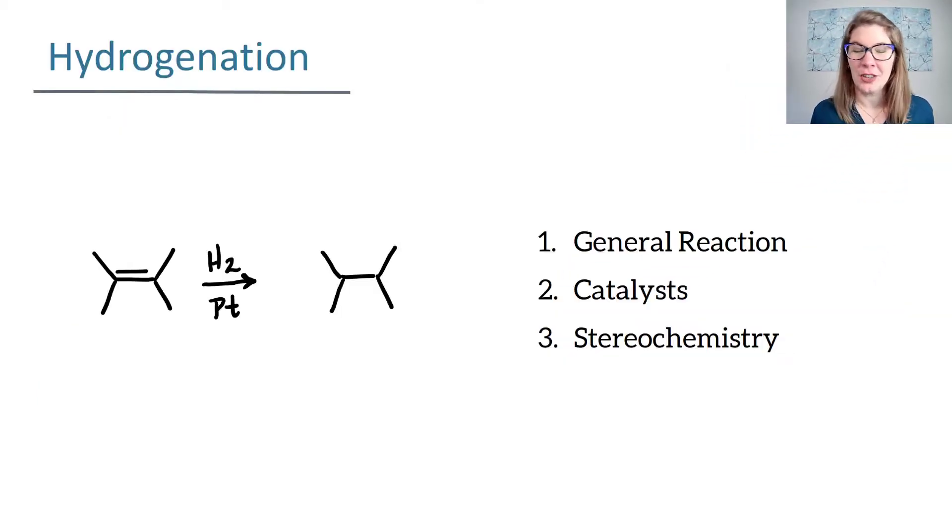In the hydrogenation reaction, you are adding hydrogen along with a catalyst to an alkene. When you add that hydrogen along with the catalyst to an alkene, you are seeing H and H add across the pi bond, so your alkene is turning into an alkane.